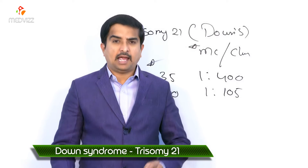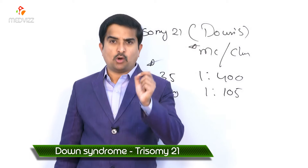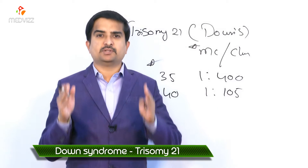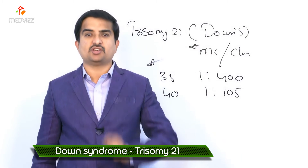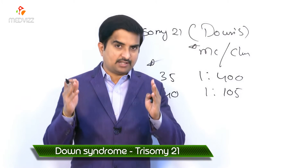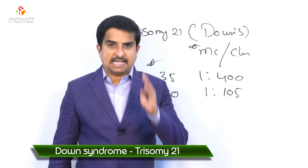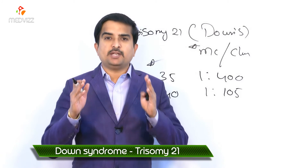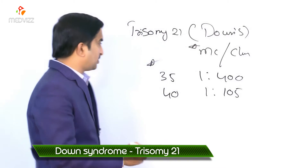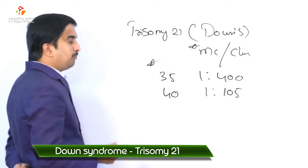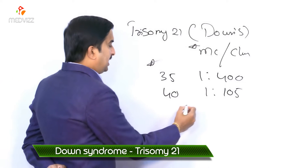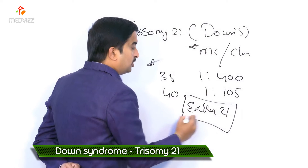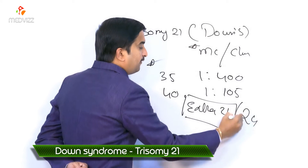Due to meiotic non-disjunction, approximately 90% of cases involve maternal non-disjunction, which correlates with maternal age. A gamete has an extra chromosome 21, giving a total of 24 chromosomes in that gamete — the key point is the extra chromosome 21, making the total 24.